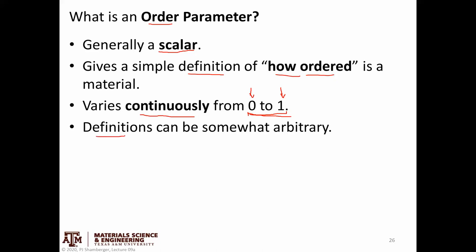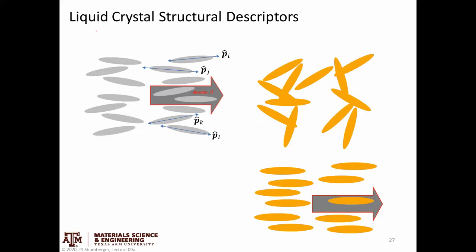The specific definitions can be a little arbitrary — we're looking for a mathematical function that fits these definitions. An order parameter of zero means no rotational or orientational order, so those mesogens are free to spin freely — we wouldn't call that a liquid crystal anymore, that would be a liquid. Similarly, I might have a system with complete order where all mesogens point exactly in the same direction, which would be a very special case. With liquid crystals we never quite reach that point — we're somewhere below full order.